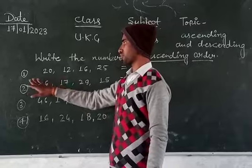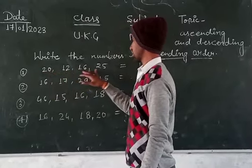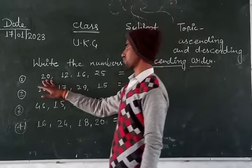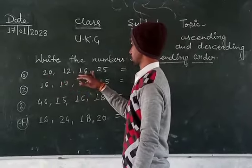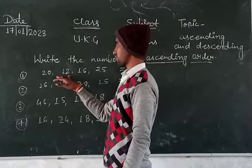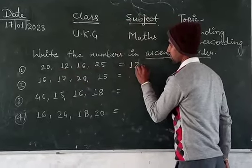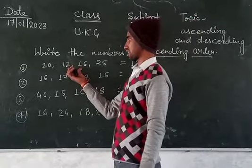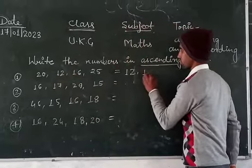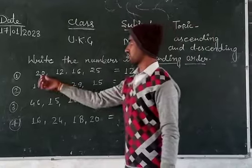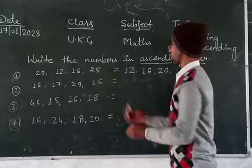In the first example, the numbers are 12, 125, 20, 22, 16, and 25. We first select the smallest number, which is 12. Then the next biggest number is 20, and then 25.